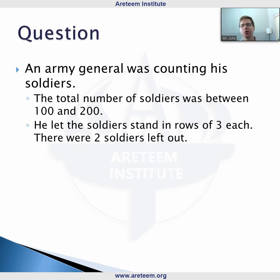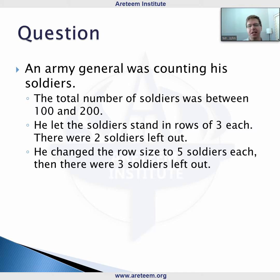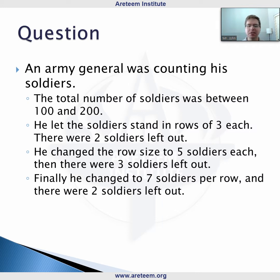If he let his soldiers stand in rows of three each, two soldiers were left out. He changed the row size to five soldiers each, there were still three soldiers left out. If he changed it to seven soldiers per row, there were two soldiers left out. The question is, how many soldiers were there? This type of question became known as the Chinese Remainder Theorem.